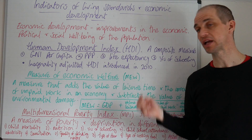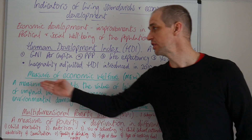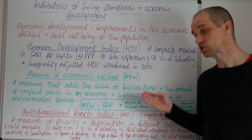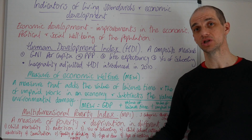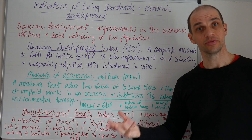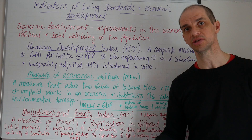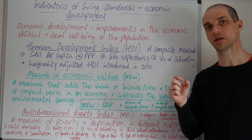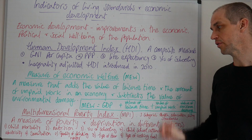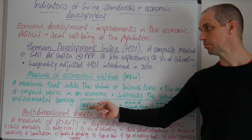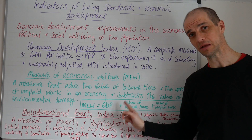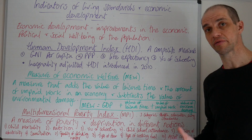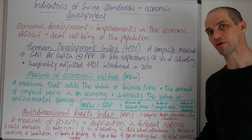The second measurement is the Measure of Economic Welfare, or MEW. This is a measure that adds the value of leisure time and the amount of unpaid work in an economy, and subtracts the value of environmental damage that occurs as a result of the increase in production and consumption within an economy. The calculation is: MEW = real GDP per capita at purchasing power parity, plus the value of leisure time, plus the value of unpaid work, minus environmental damage.